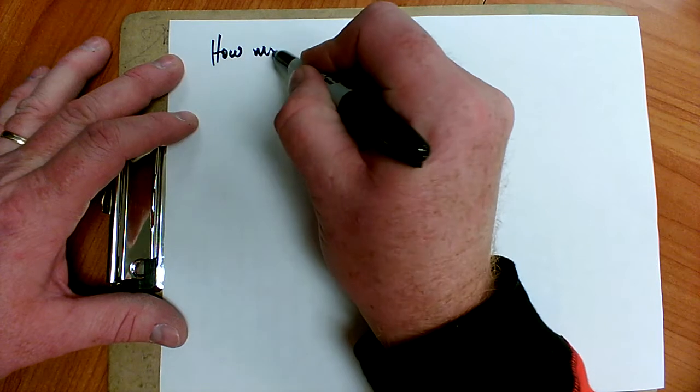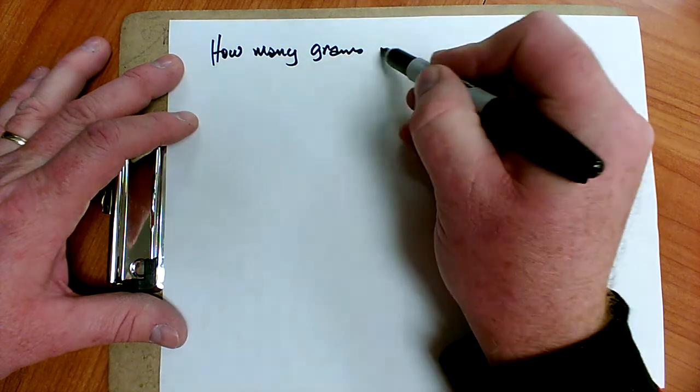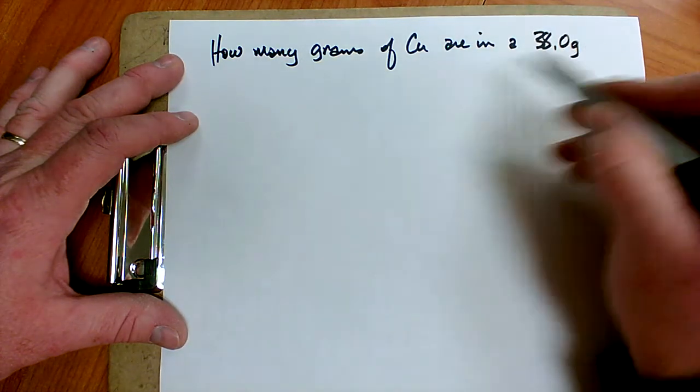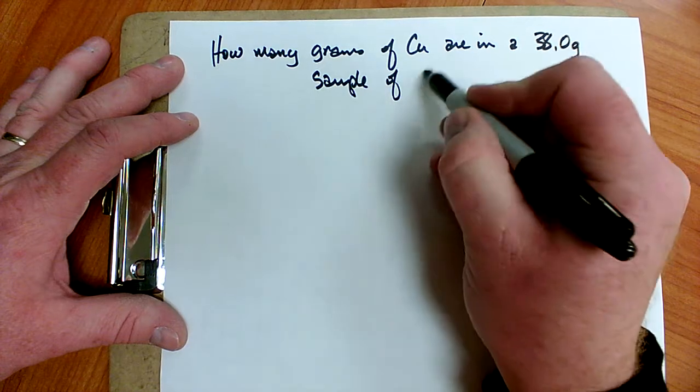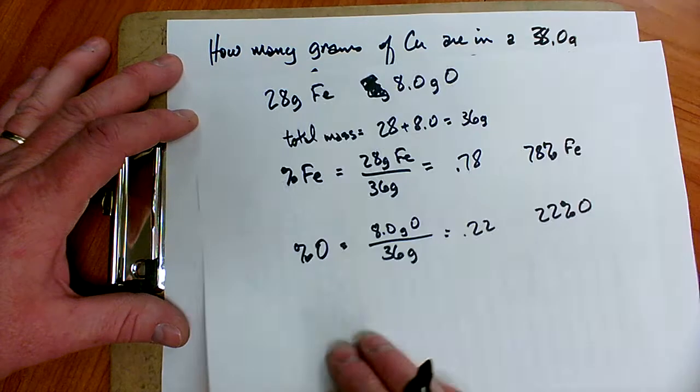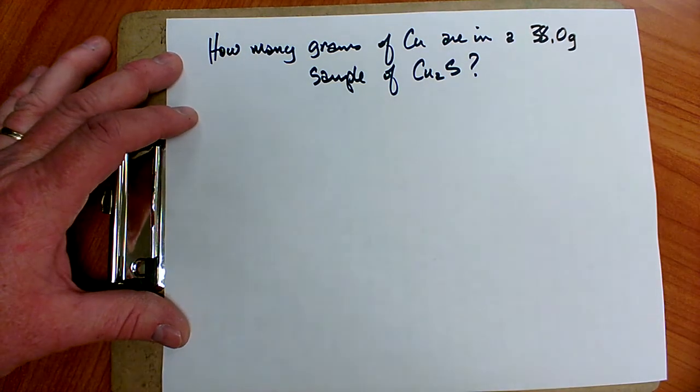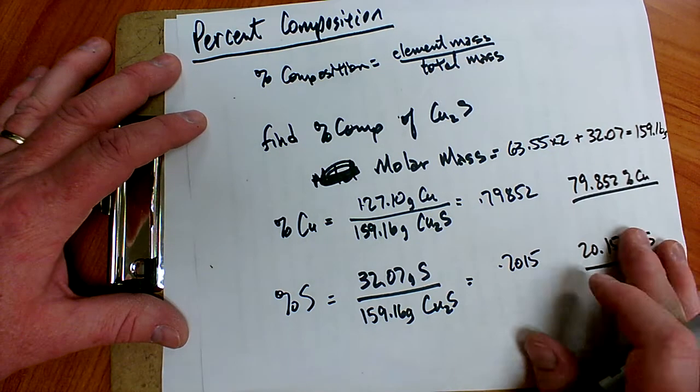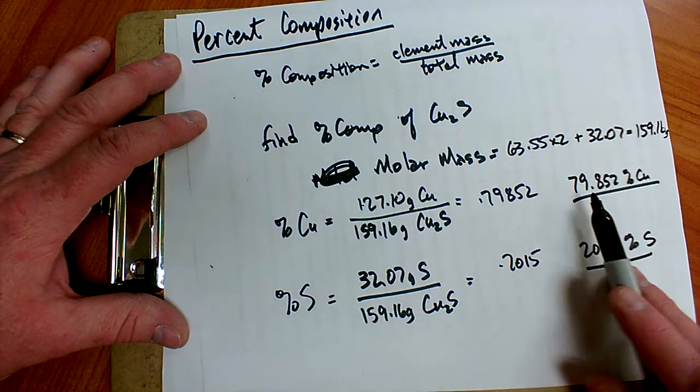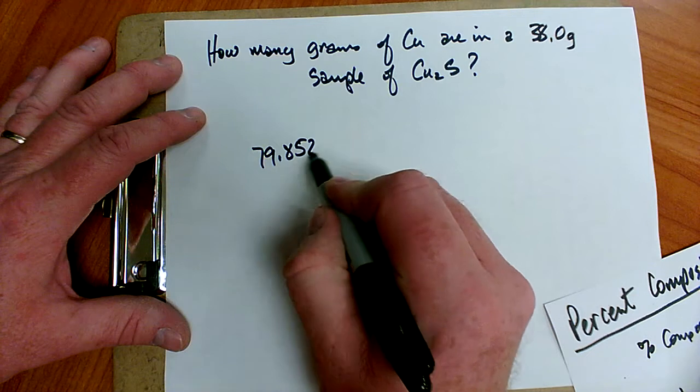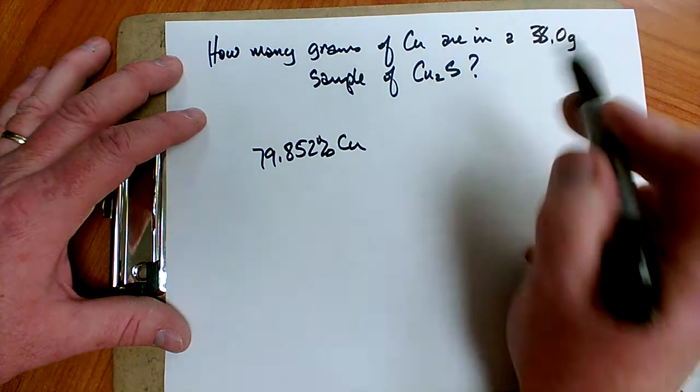Now suppose I wanted to know something like how many grams of copper metal are in a 38.0 gram sample of copper 1 sulfide. Well, I'm going to go back to my copper sulfide where we found the percent composition. So we found that in copper 1 sulfide, it's 79.852 percent copper.